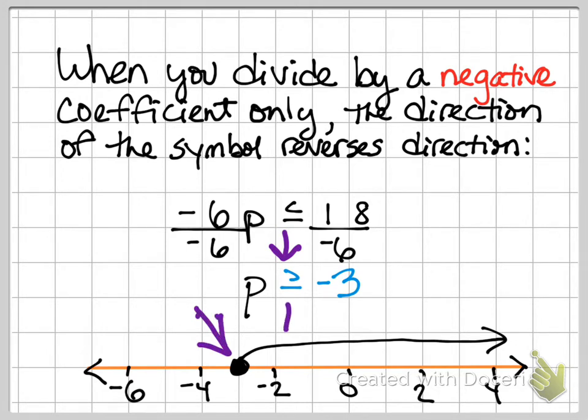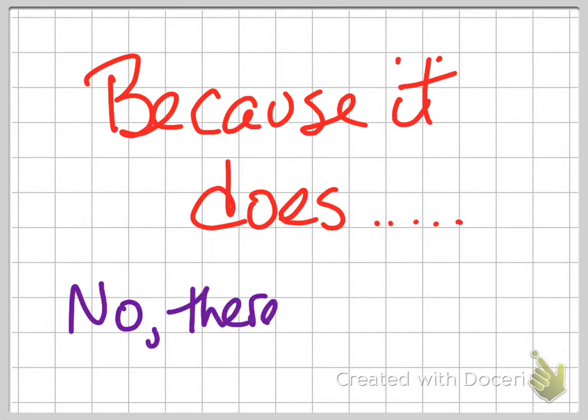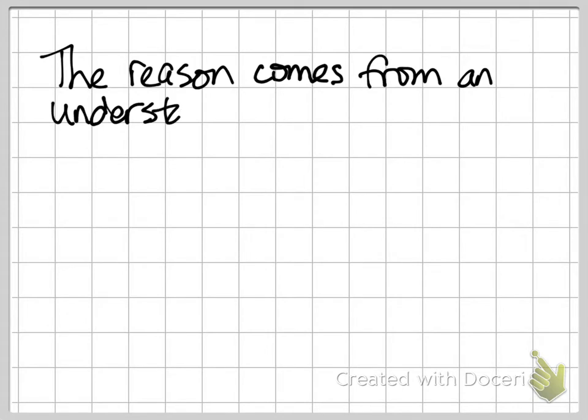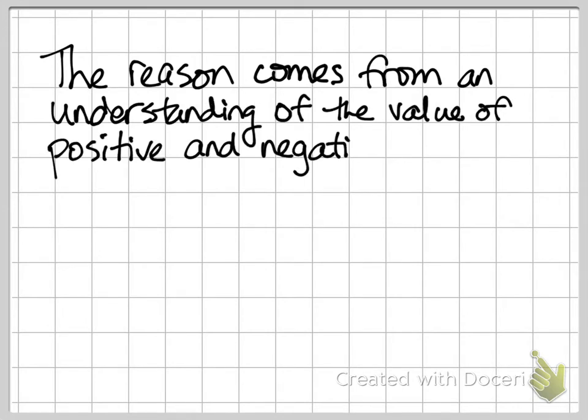I then divide by the coefficient of 8. That gives me y is less than or equal to 5 and 4 eighths, which reduces to 5 and 1 half. That is shown here on the number line. This is the location of 5 and 1 half, and my arrow direction matches what's in the actual question itself.